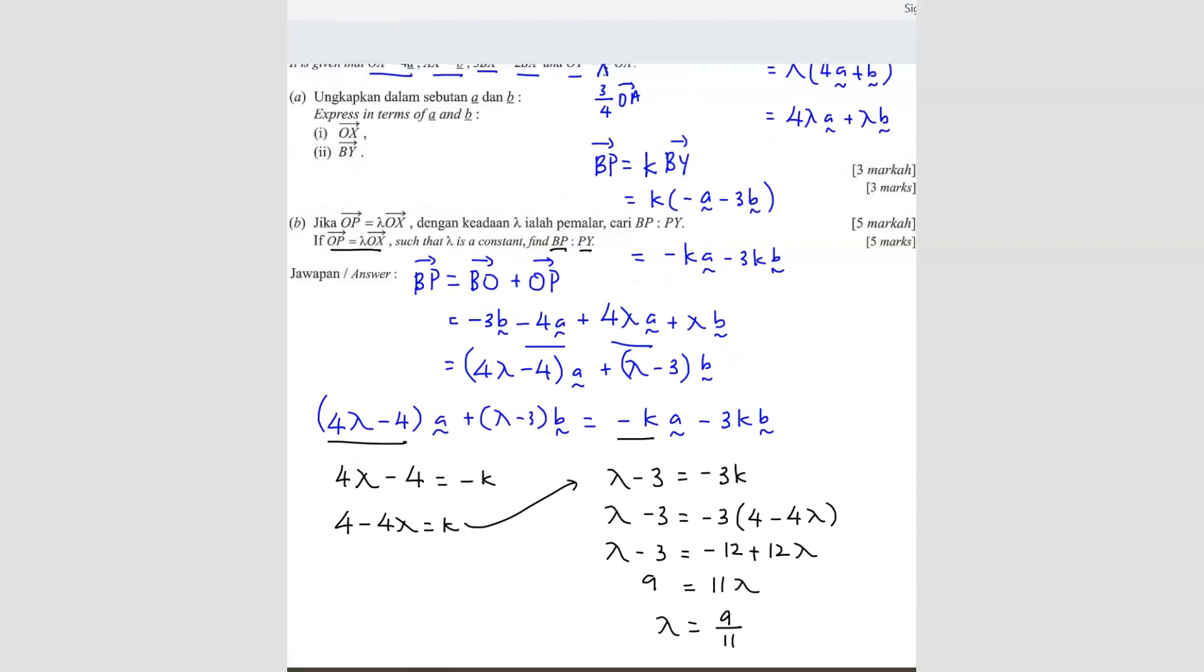Now that we have already gotten lambda, we can substitute lambda back into this equation to find the K value. So 4 minus 4 times 9 over 11 equals to K. So you just type in your calculator, you will get K equals to 8 over 11. Why do we need this? Because we want to substitute back into our original equation here. So we know that K is 8 over 11. So that means BP, the ratio BP over BY is equals to 8 over 11.